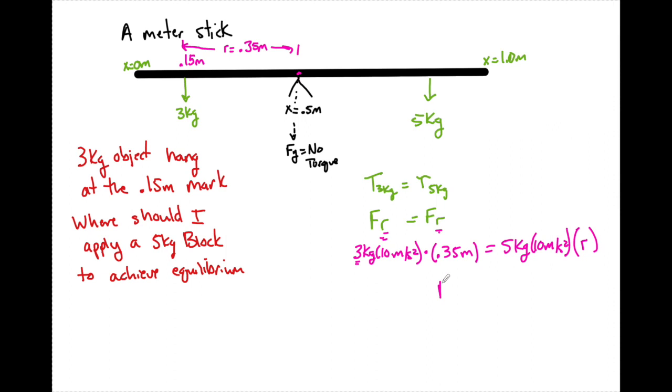So when I solve for this, I get R equals 0.21 meters. So we have to be very, very careful. We do not place it at the 0.21 meter mark. That is not where we want it. We have to start here and go this way 0.21 meters.